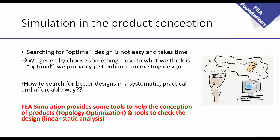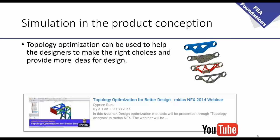How can you search for a better design in a systematic, practical, and affordable way? It's easy to say 'oh, you have to be creative, you're a designer, just think about the solution,' but there are things you can do even if you're not so creative. You can use FEA simulation and tools called optimization — topology optimization, for example. You can also use linear static analysis, which I will present today to check the product. I won't talk about topology optimization in this webinar, but it is a very useful tool to make the right choice and provide an optimal design.